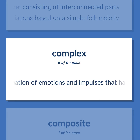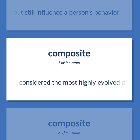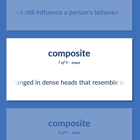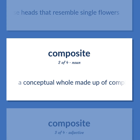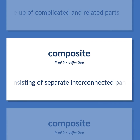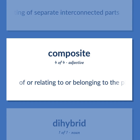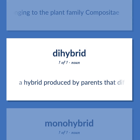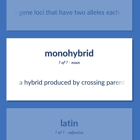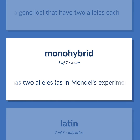In psychoanalysis, a combination of emotions and impulses that have been rejected from awareness but still influence a person's behavior. COMPOSITE — considered the most highly evolved dicotyledonous plants, characterized by florets arranged in dense heads that resembling single flowers. A conceptual whole made up of complicated and related parts; consisting of separate interconnected parts. Of or relating to the plant family Composite. A hybrid produced by parents that differ only at two gene loci that have two alleles each. A hybrid produced by crossing parents that are homozygous except for a single gene locus with two alleles, as in Mendel's experiments with garden peas.